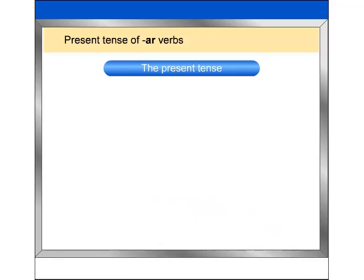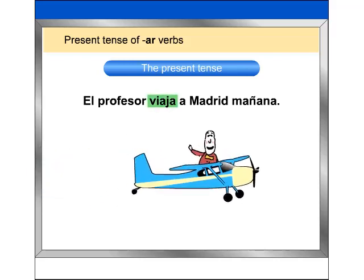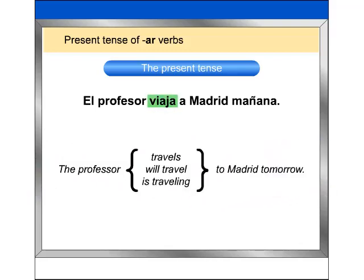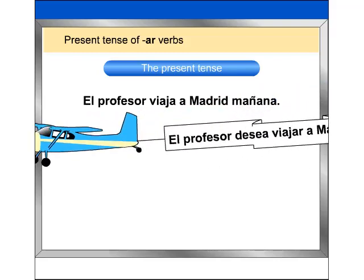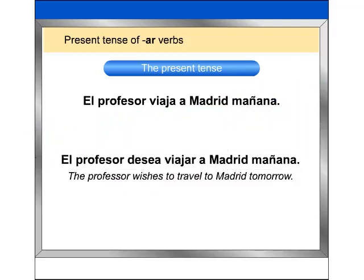In Spanish and English, the present tense is also used to express future action. El profesor viaja a Madrid mañana — the professor travels to Madrid tomorrow, or the professor will travel to Madrid tomorrow. Remember that when two verbs appear together with no change of subject, the second verb is usually in the infinitive. El profesor desea viajar a Madrid mañana.